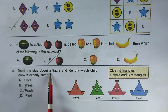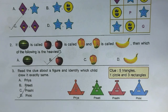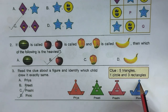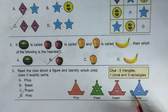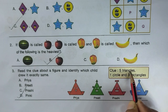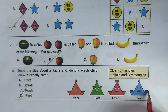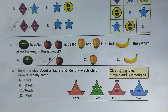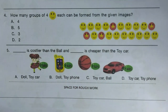Repeating the solution: start with one circle — out of all figures, only the blue one has one circle. Confirming with five triangles: one, two, three, four, five — and three rectangles confirmed. Hence option D, Pinky, is the right answer.